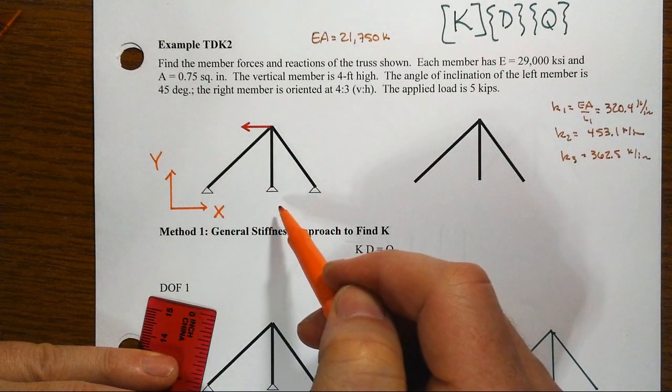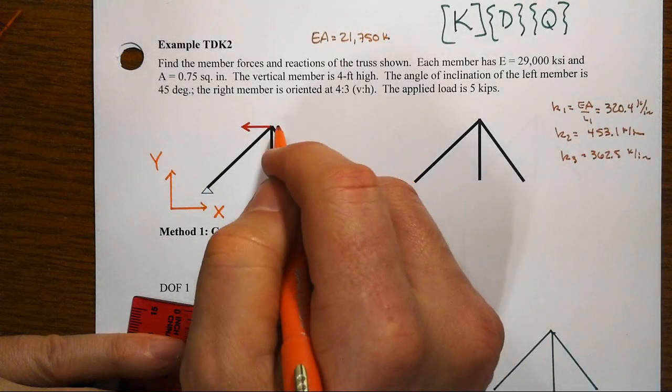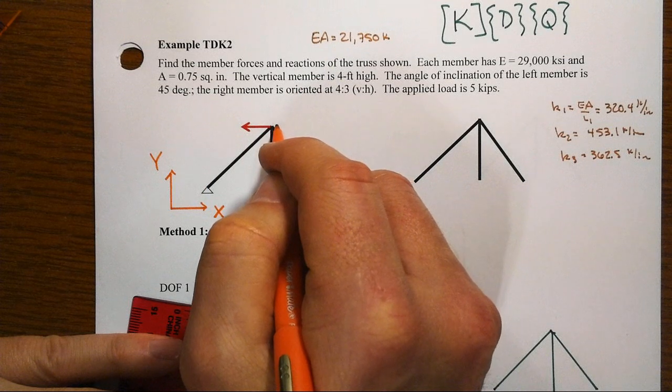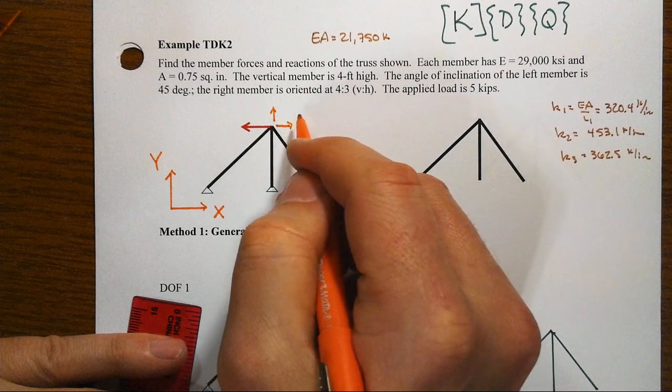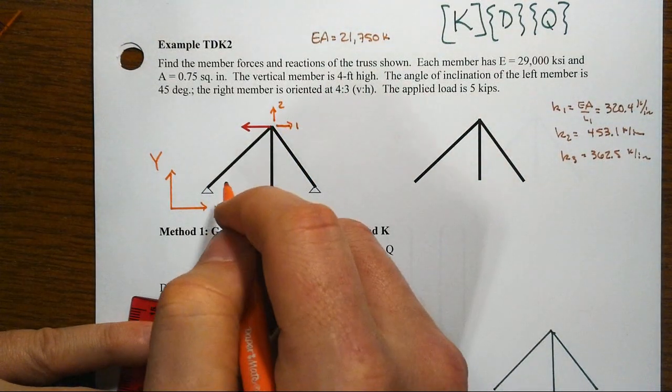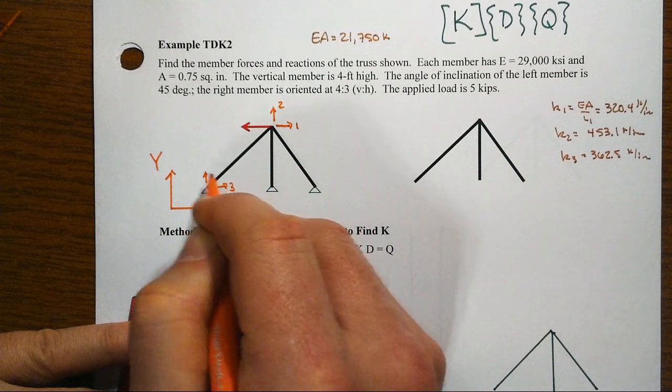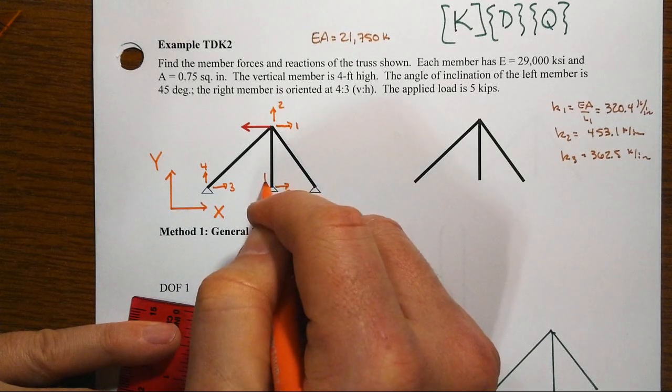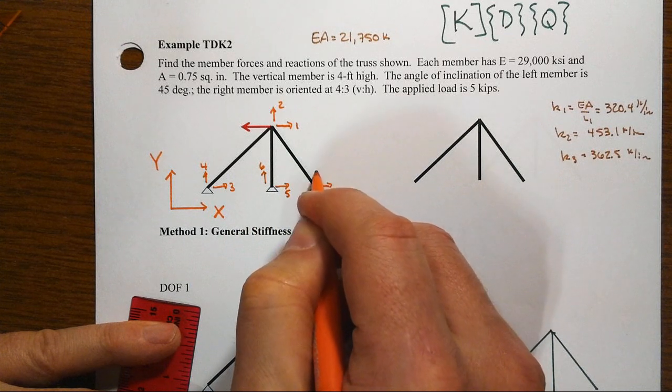Since there's a total of four unique locations where members are connected, that means four times two. I have a total of eight complete degrees of freedom, two of which are established right up here at that top joint that is free to move in both directions. Whereas I come down to the lower left, that's a support. So I'm just going to label my degrees of freedom already thinking about how I would partition this up and make it easy to manipulate all of the equations later on.